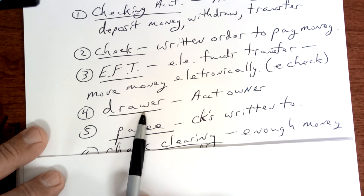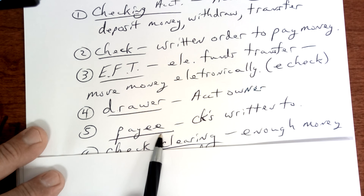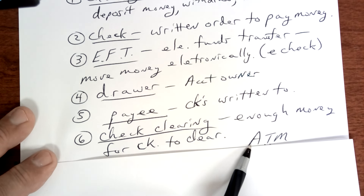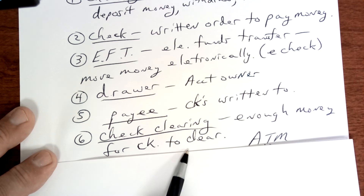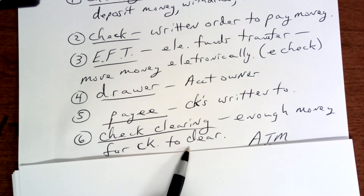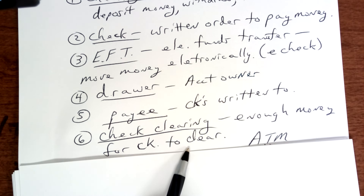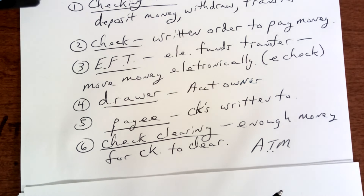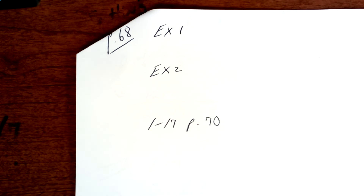When you write a check, you are the account owner and you're considered to be the person drawing on your account. The payee — like an employee — is the person you're writing the check to. Check clearing is where you have enough money for your check to clear the funds in your bank account. If you write a check without sufficient funds you're going to be charged, and there are legal issues as well. An ATM machine is where you can bank without actually speaking to a teller.